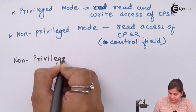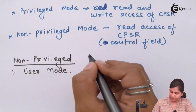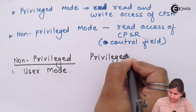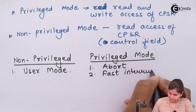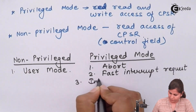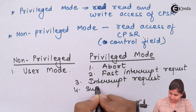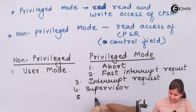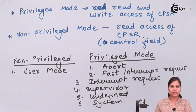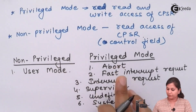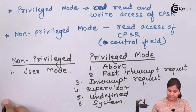In the non-privileged category there is only one mode: the user mode. In the privileged category there are six modes: fast interrupt request (FIQ), interrupt request (IRQ), supervisor, undefined, abort, and system. So there are seven total modes — user mode is non-privileged and the remaining six are privileged modes.